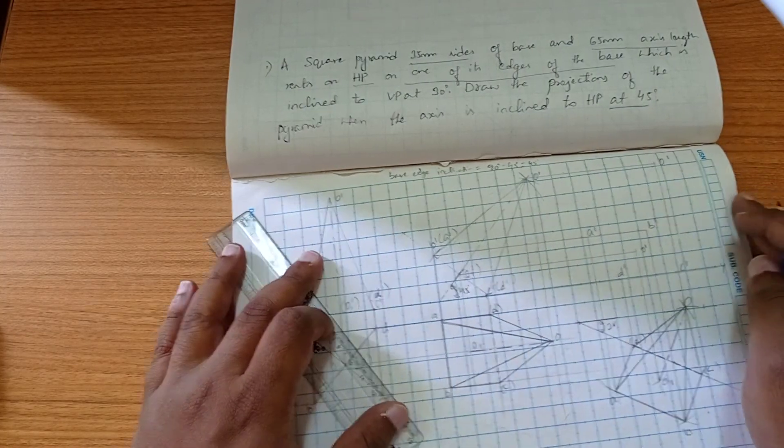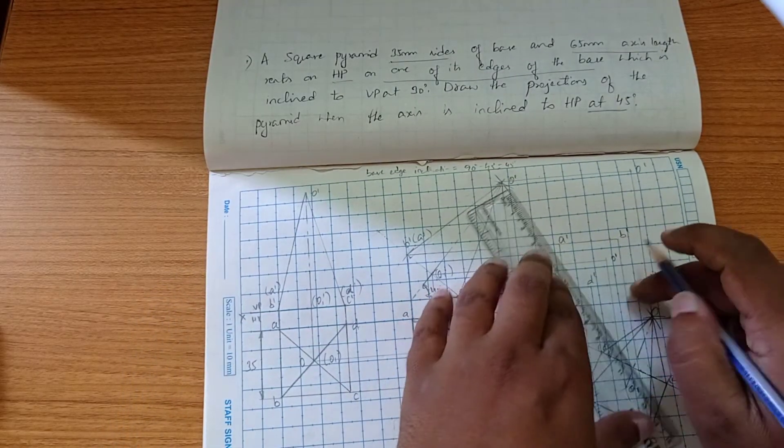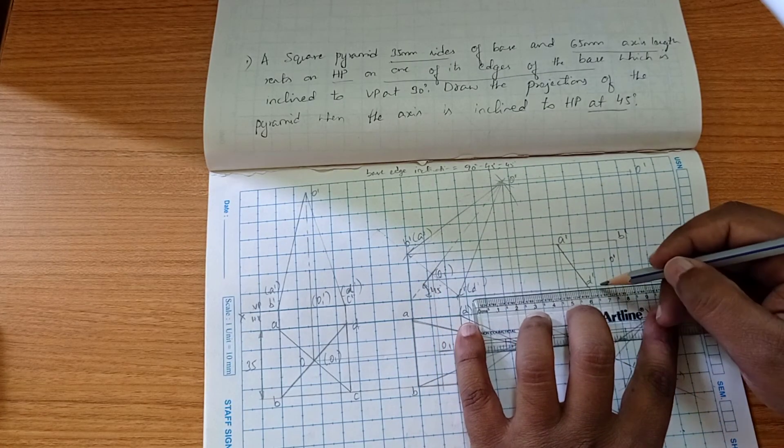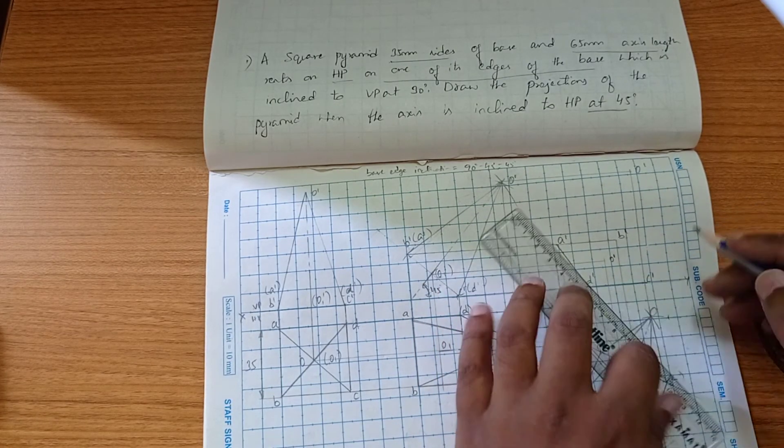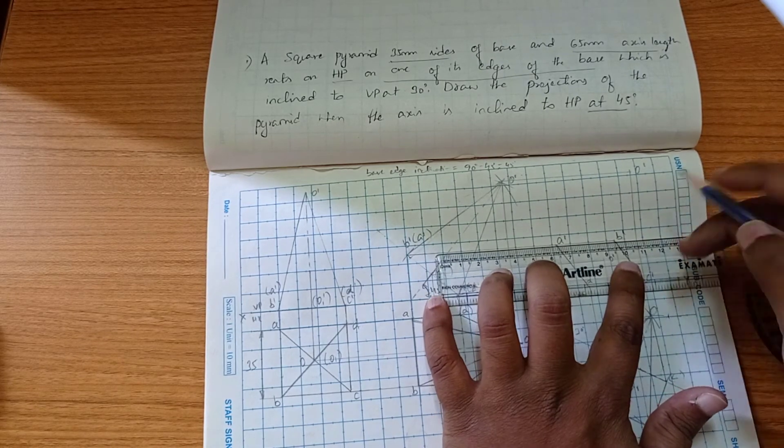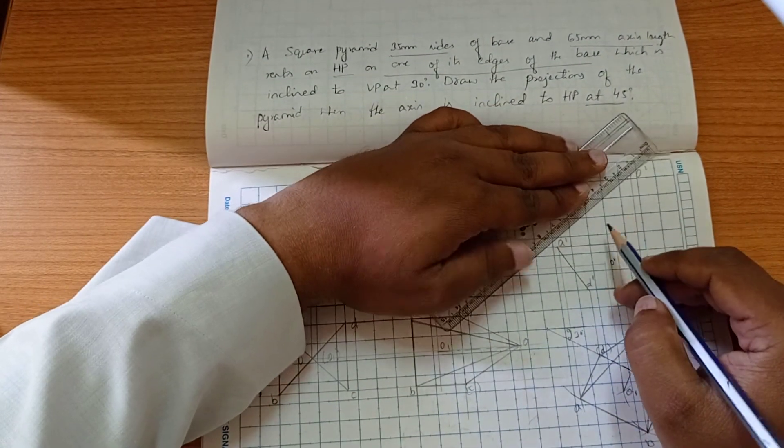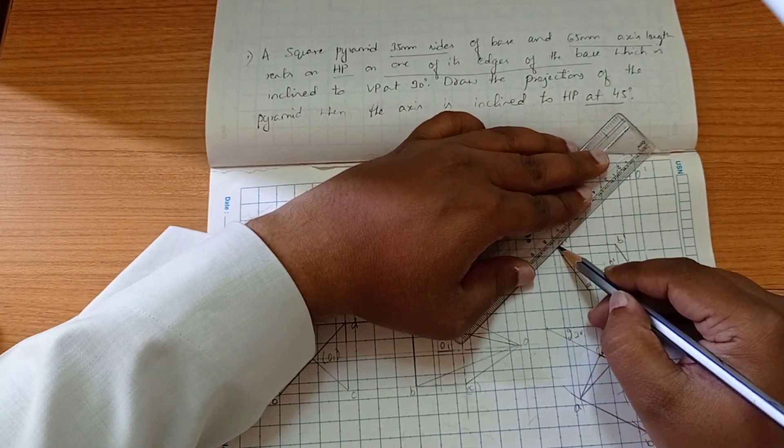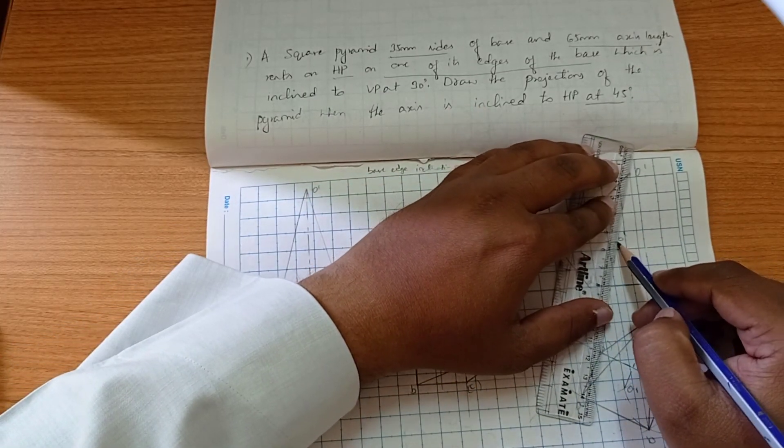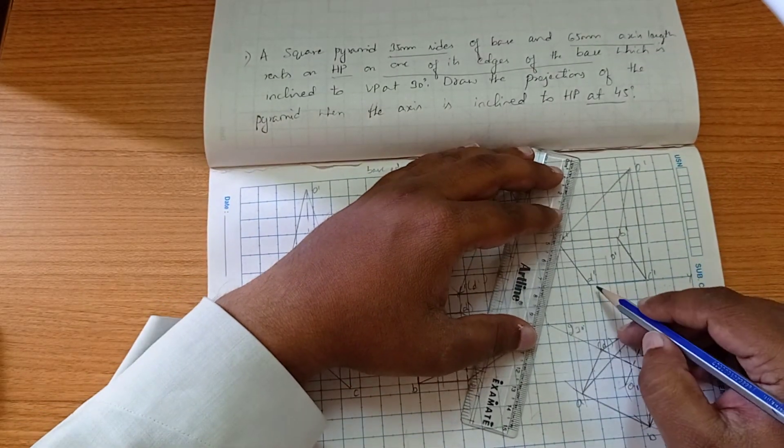The concept for constructing the final position of the pyramid is first we have to construct the base. Since the base is a square, we are constructing a square here. Then we draw the slant ridges.